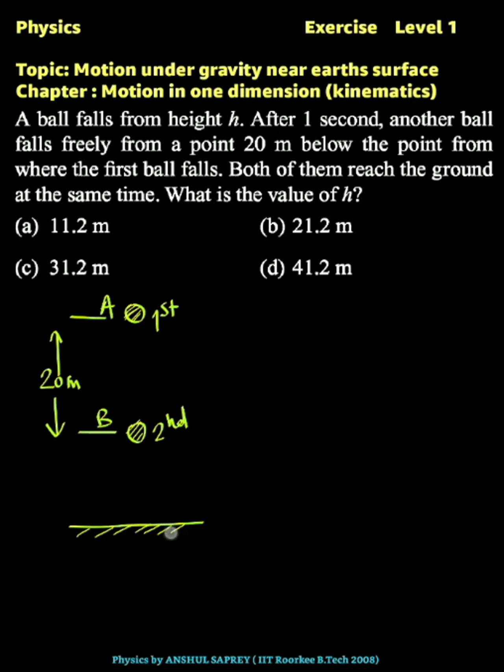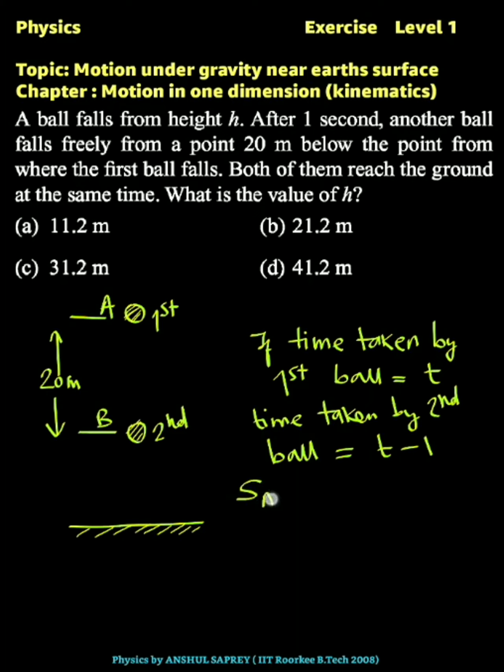And here is the ground. According to the question, both of them reach the ground at the same time. Now the second ball is dropped one second later, so if time taken by first ball is equal to t, then time taken by second ball will be t minus 1 seconds.